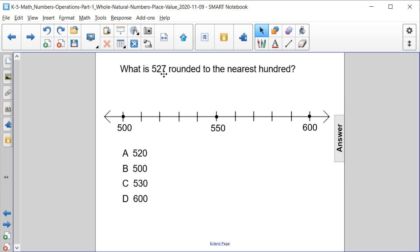What is 527 rounded to the nearest hundred? Is it A) 520, B) 500, C) 530, or D) 600?